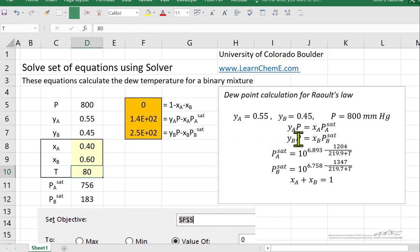And then what we'll do with these equations is we'll rearrange them slightly and put everything on one side of the equation. So this equation becomes one minus XA minus XB.